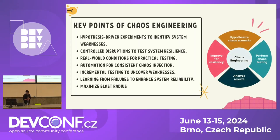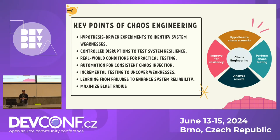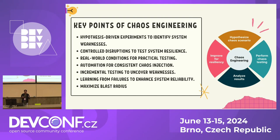Now, key points of chaos engineering. We have four steps. The first is hypothesis-driven. In deterministic testing if you have 10 test cases, you test based on those. But why hypothesis-driven? Because until and unless we are experimenting in the production environment, we cannot literally say — because the CPU size or memory size is different per environment. We should take the hypothesis based on the production environment. But if you don't want to perform chaos in production, you can start with dev or QA and later move to prod.